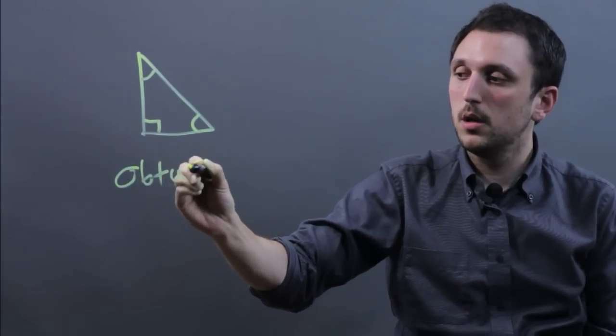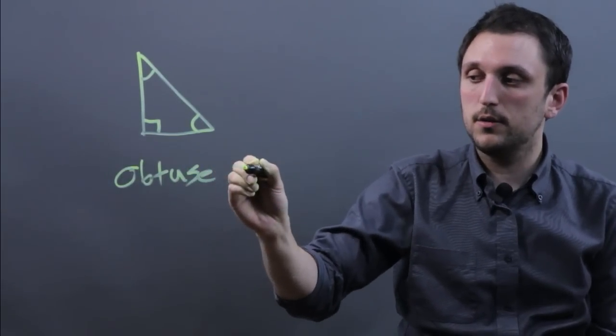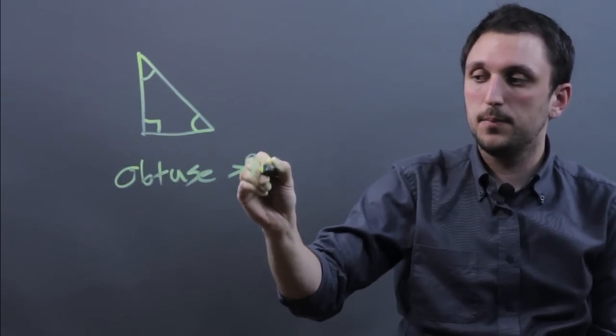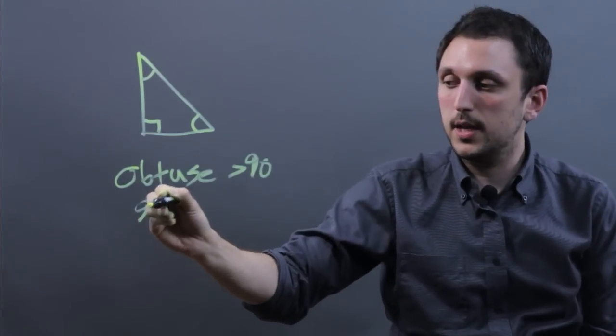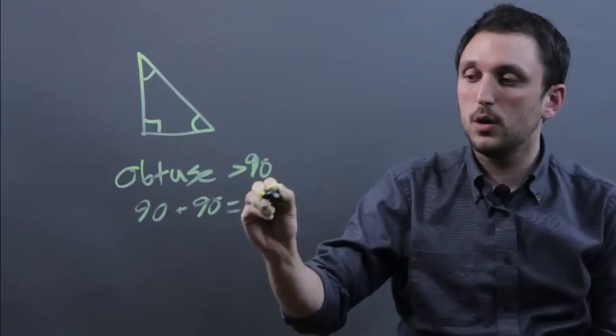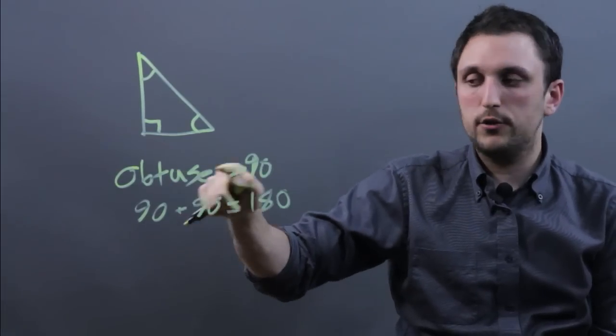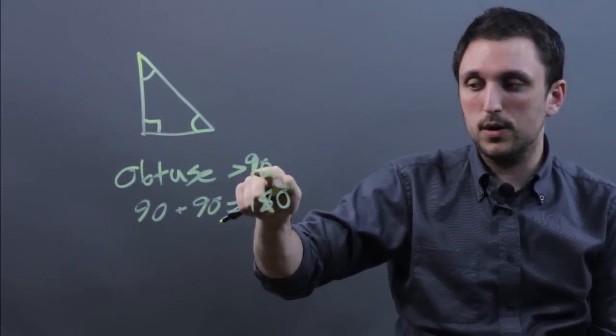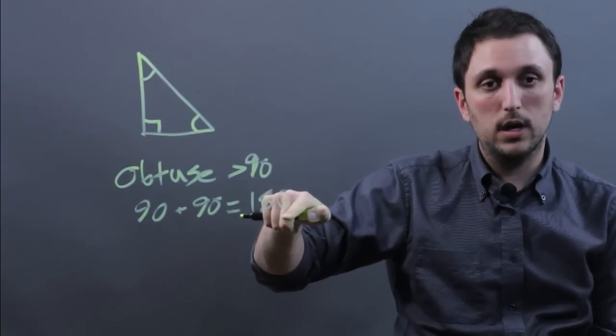Obtuse means an obtuse angle is greater than 90. And if you think about it, 90 plus 90 equals 180. So if you had two obtuse angles, both greater than 90, you would have more than 180 degrees.